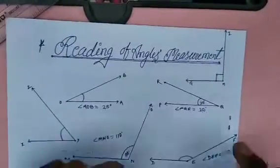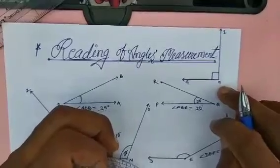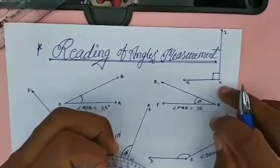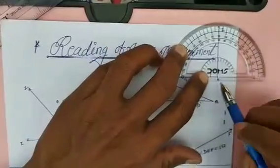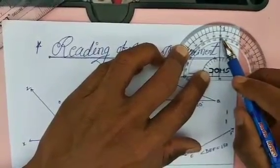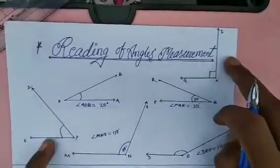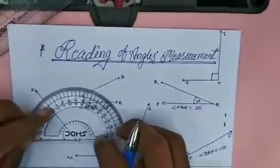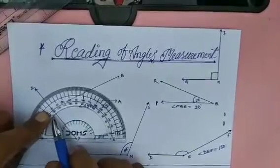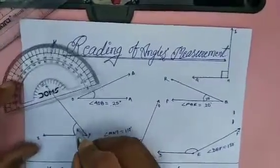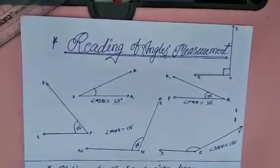One more angle: GHI. Can you guess its degree? Yes — it may be 90 degrees, a right angle. Let's check. Ray HI is on 90, so it is a right angle. So we got two acute angles, two obtuse angles, and one right angle. The last angle — can you tell me its degree? It will be 50 or 130 degrees. We take 50 degrees because it is an acute angle. If it were obtuse, we would take 130 degrees.